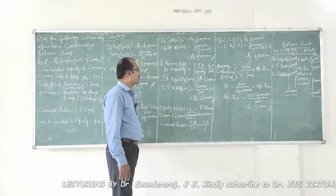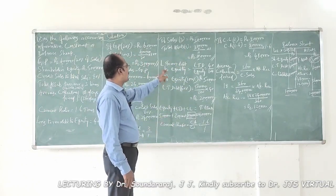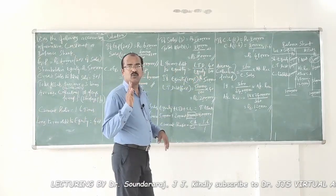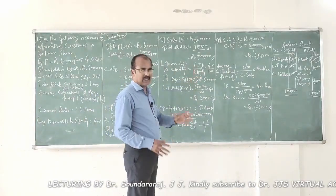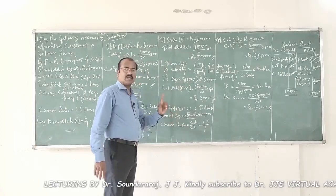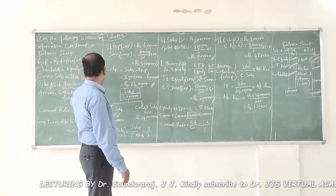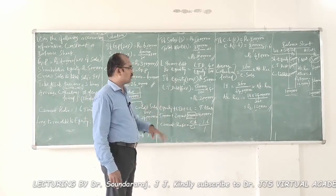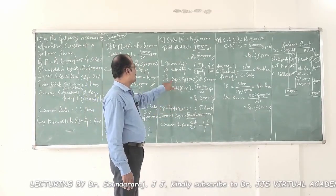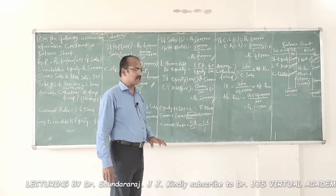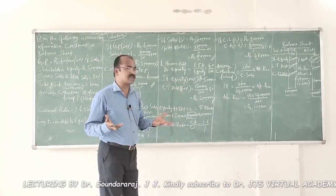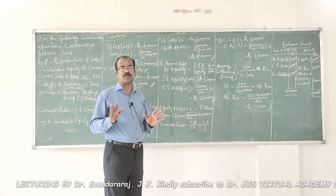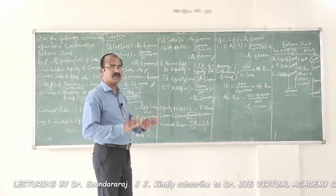The next ratio given is long-term debt to equity: long-term debt divided by equity equals 40 percent, or 40 by 100. We know equity amounts to 5 lakh rupees as given in the problem. Therefore, if equity at 100 percent equals 5 lakhs, long-term debt at 40 percent equals 5 lakhs divided by 100, multiplied by 40, giving us 2 lakh rupees.